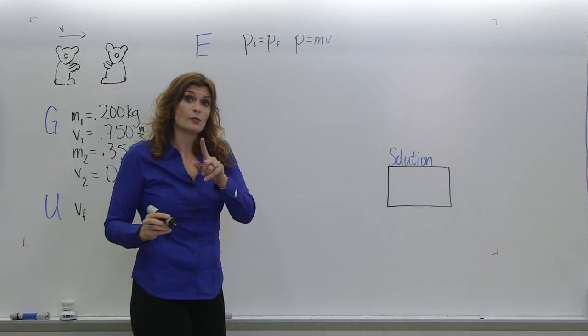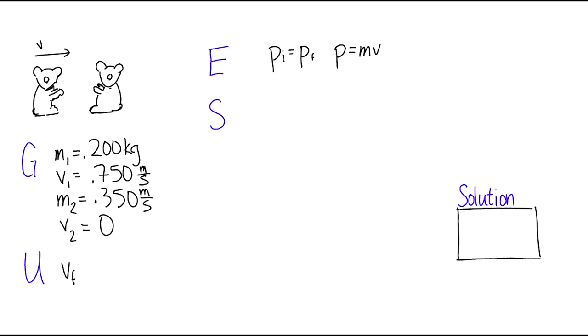We remember that initial momentum is m1v1 plus m2v2. This is still true, and final momentum is m1 plus m2 times v final.